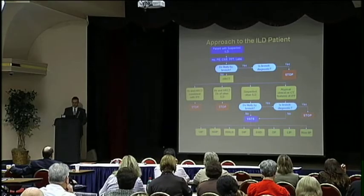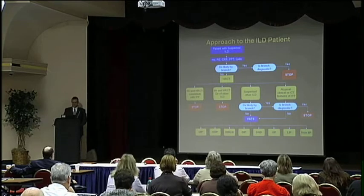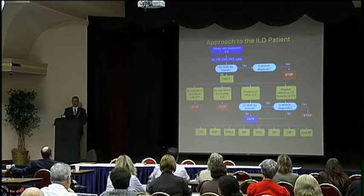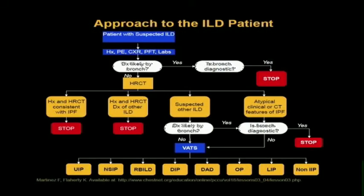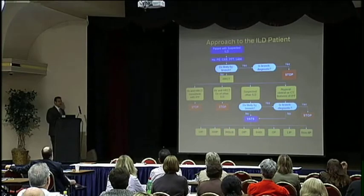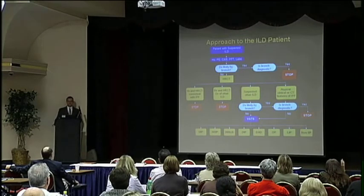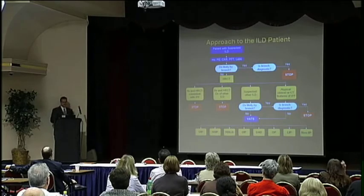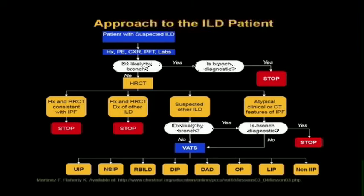This is a useful algorithm for the approach to the ILD patient. Starting with a patient with suspected interstitial disease, you do the usual workup: history, physical, chest x-ray, imaging, PFTs, and labs. Bronchoscopy has started to be used less, especially in patients with IPF. If you think the diagnosis is unlikely to be obtained by bronchoscopy, you shouldn't do it. If you think it's a diagnosis you can easily make with bronchoscopy — such as sarcoidosis — then bronchoscopy is a good idea. If the diagnosis is unlikely by bronch, high-res CT should be your next imaging study.